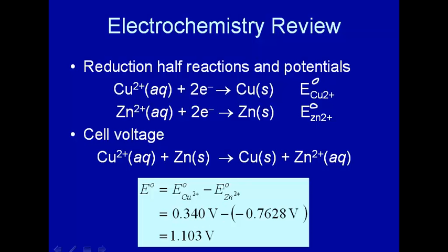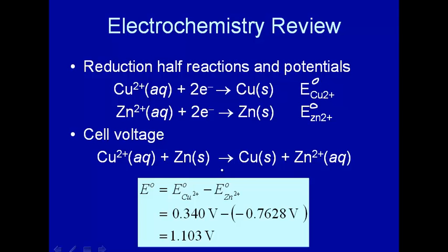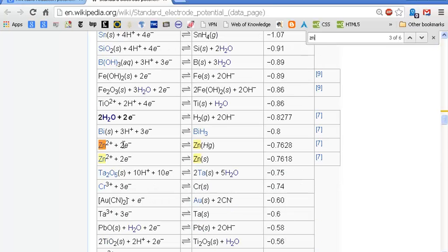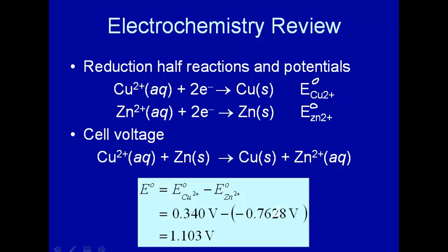The standard reduction potential for Cu²⁺ to go to copper solid is 0.340V. Let's look at the standard reduction potential for zinc. Here it is: Zn²⁺ + 2e⁻ → Zn(s). This one down here, -0.7618V. That should be -0.76V. So you take the reduction potential of the thing being reduced and subtract off the reduction of the thing being oxidized and you get the cell voltage 1.103V. That's a brief review of introductory chemistry concepts that will be useful later on in electrochemistry.